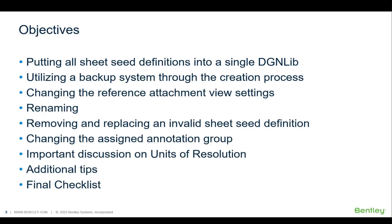Some of our objectives will be to put all of our sheet seed definitions into a single DGN library, utilize a backup system through the creation process, change the reference attachment view settings, renaming, removing, and replacing an invalid sheet seed definition, changing the assigned annotation group, an important discussion on units of resolution, additional tips, and a final checklist.